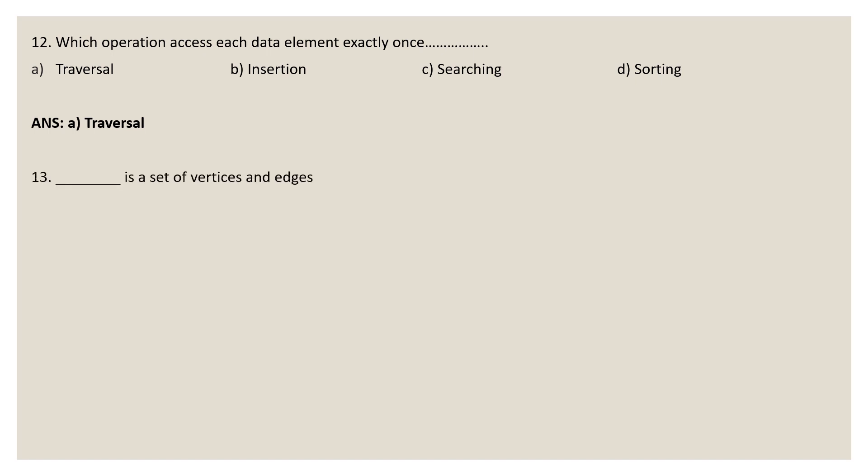Question 13: what is a set of vertices and edges? Options: tree, graph, queue, stack. The correct answer is graph, because a graph is a set of vertices and edges that connect them. A graph is a collection of nodes — called vertices — and the connections between them, called edges.